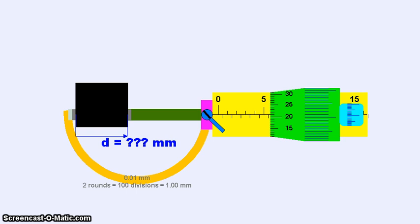So if we were to read the yellow scale it will read 0, 0.5, 1, 1.5, 2, 2.5, 3, 3.5, 4, 4.5, 5, 5.5. So the yellow scale now reads 5.5 mm.